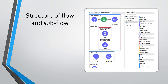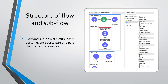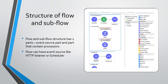A flow also has two parts. The first part contains an event source component, and the second part contains one or more processors. A flow can have an event source like an HTTP listener or scheduler in the event source part, and a flow always has one or more processors inside the processor part. Subflow does not have an event source part — it only has one or more processors.